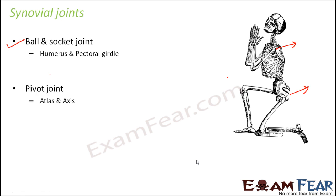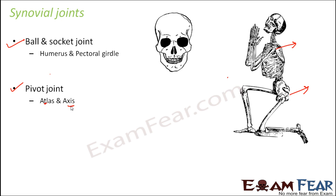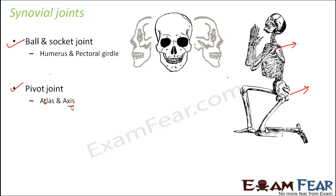Another example is the pivot joint, which is present at atlas and axis. Atlas and axis are the joints where the neck is joined to the head. The connection between the neck and head is important because of that we are able to move our head from side to side or from front to back, and those movements are possible due to the presence of the pivot joint.